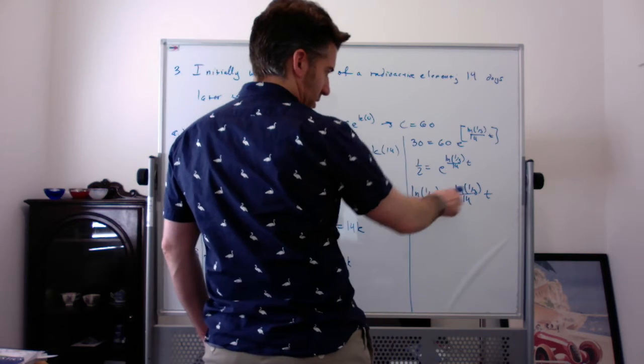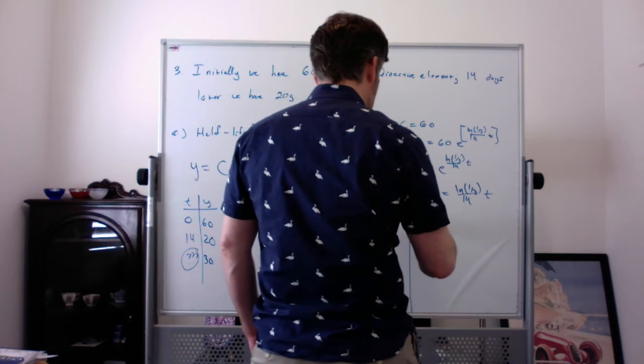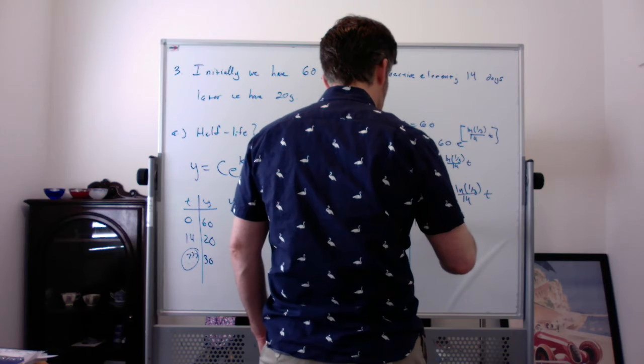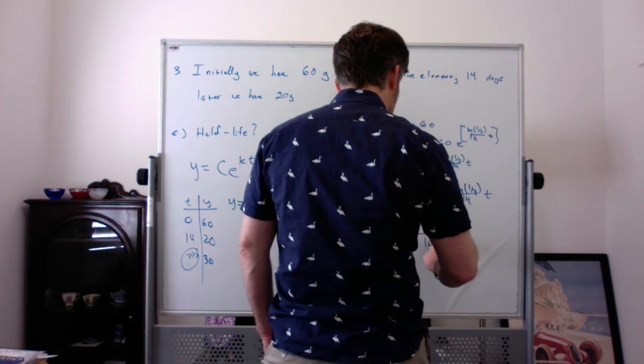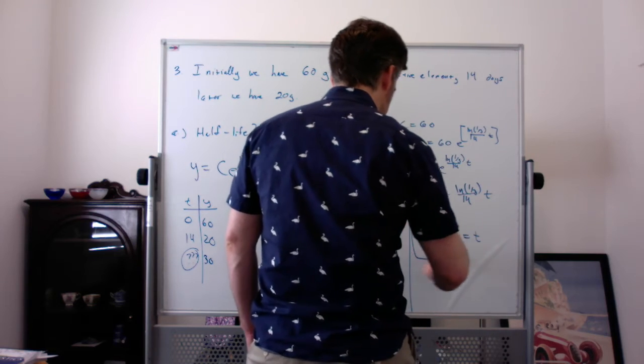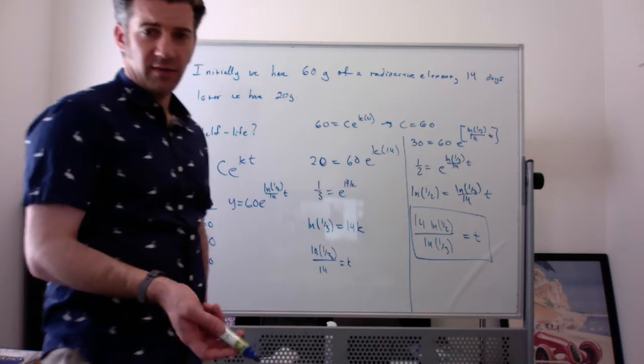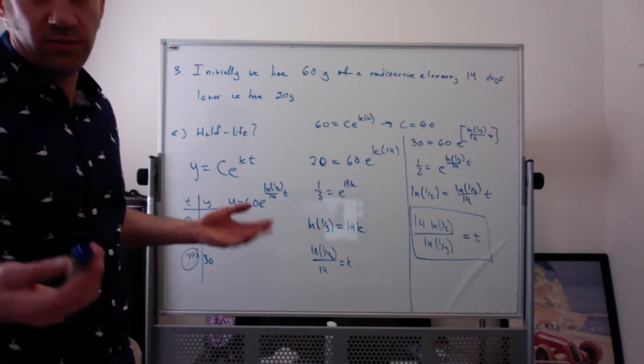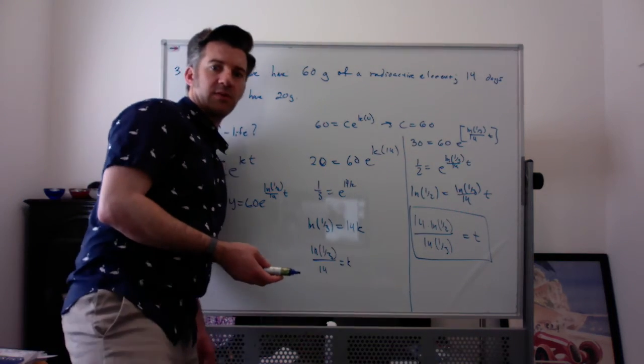And then finally, multiply both sides by 14 and divide by the natural log of 1/3. 14 times the natural log of 1/2 over natural log of 1/3 equals t. Whatever that is, that's your time. If you have a calculator, you should approximate that. If you don't, just leave it.